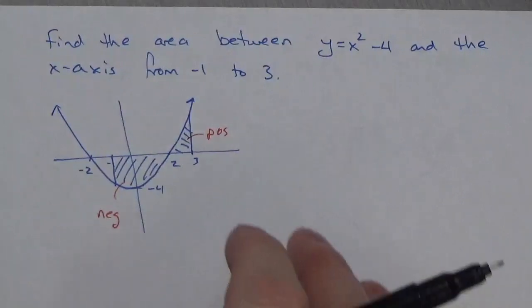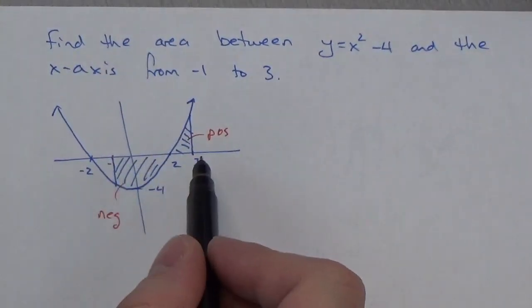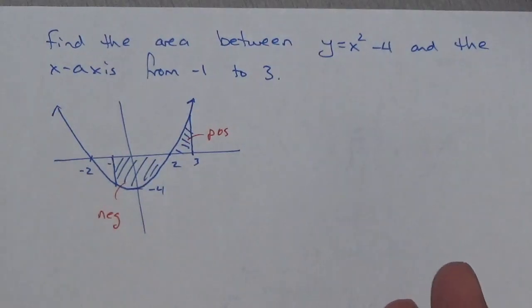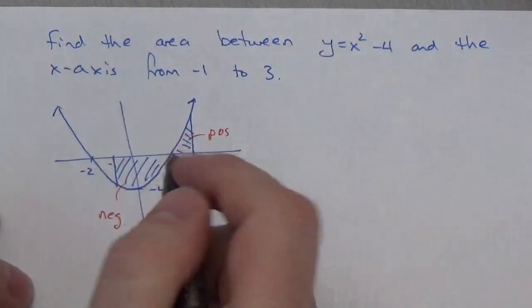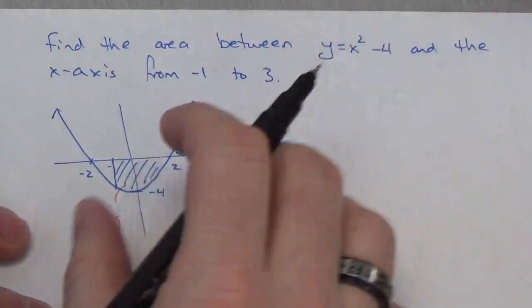Okay, that what we're actually going to find here, if we were just to find the anti-derivative from here to here, what we're going to end up with here is a value that treats this as a negative and a positive and adds those together. So, what I've got to do is I've got to split that up.